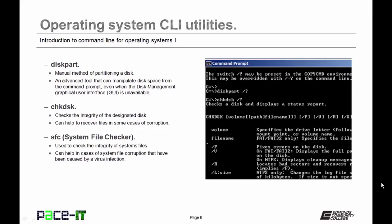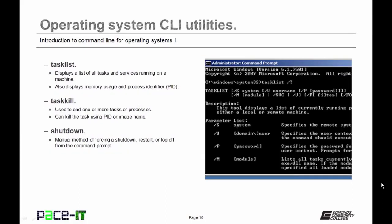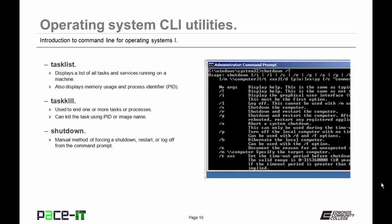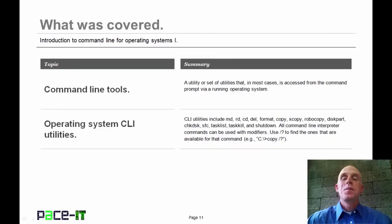Now let's move on to some other commands. Tasklist displays a list of all tasks and services running on a machine, showing memory usage and the process identifier (PID). You should run tasklist before you run taskkill. Taskkill ends one or more tasks or processes and can kill the task using the PID or the image name. Shutdown is a manual method of forcing a shutdown, restart, or log off from the command prompt.